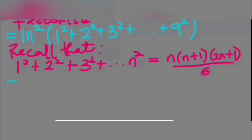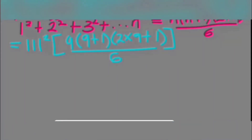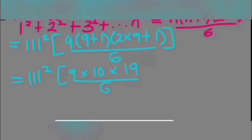We are going to apply this to what we have in the brackets. Our expression becomes 111 squared, then in the brackets, since n equals 9, we have 9 times (9 plus 1), times (2 times 9 plus 1), that's 19, everything divided by 6. This becomes 111 squared times, in the brackets, 9 times 10, times 18 plus 1 which is 19, all divided by 6.